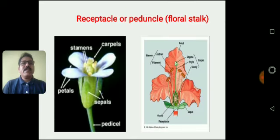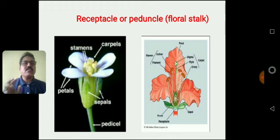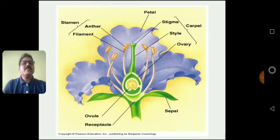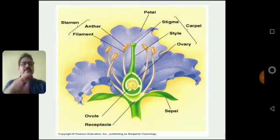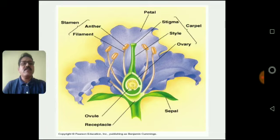Next, the Receptacle or the Peduncle. As mentioned, the flower may be pedicellate or sessile — having a stalk with the flower is called a pedicellate flower, and a flower without a stalk is called a sessile flower. This longitudinal section shows the different parts of the flower.